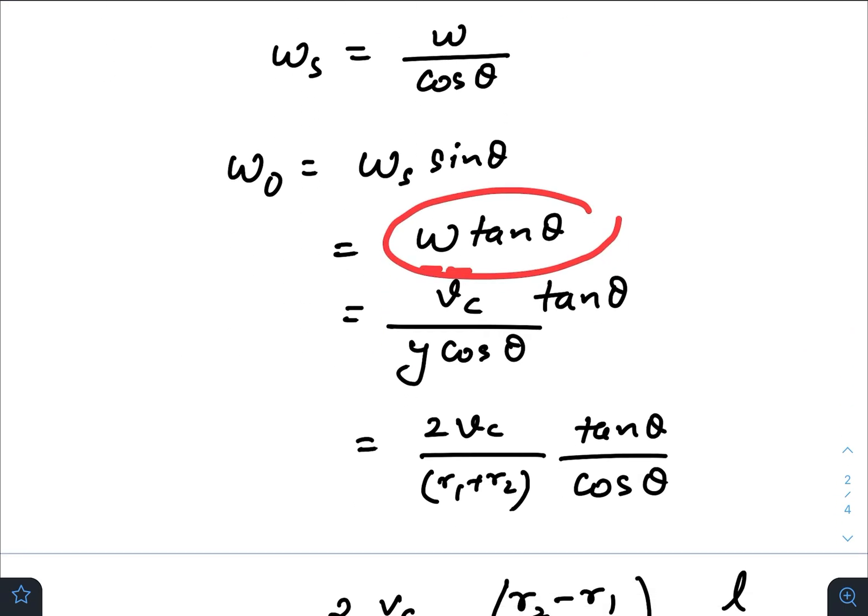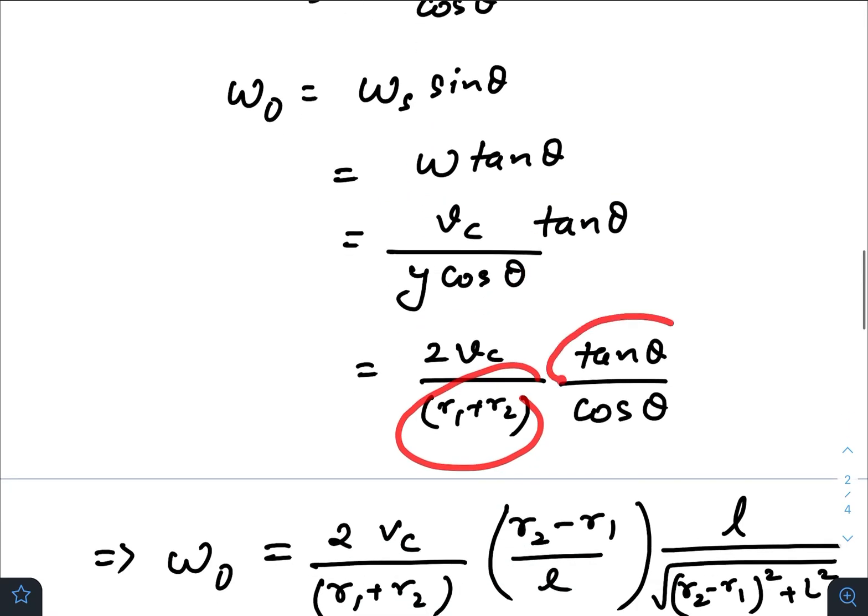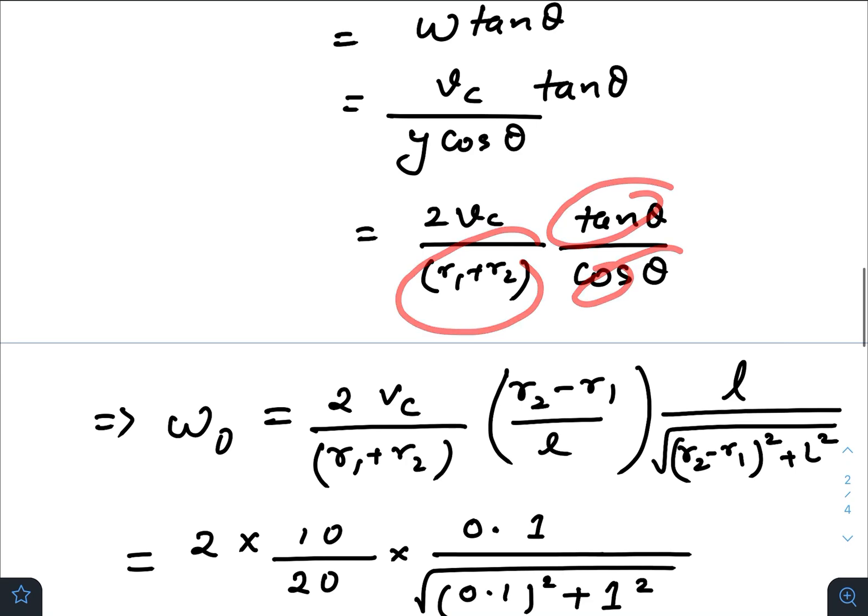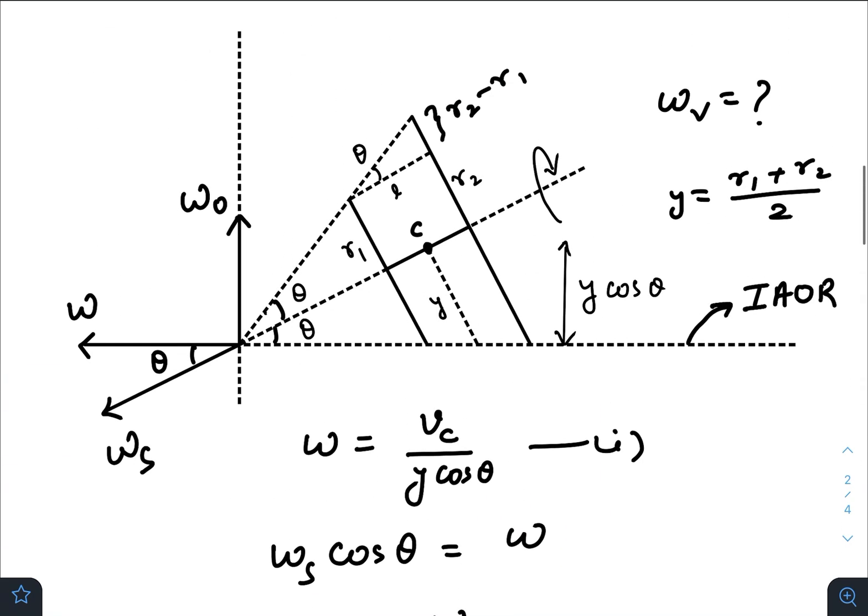And ω was previously vᴄ by y cos θ. Now just put the value of y: (r₁ + r₂)/2, tan θ by cos θ. So now tan θ you can get from this small triangle.